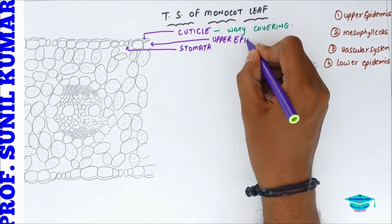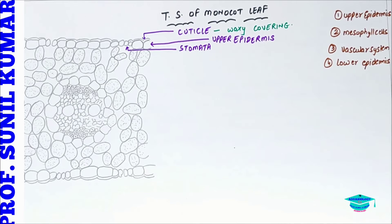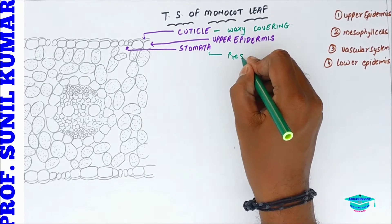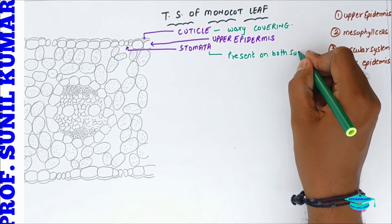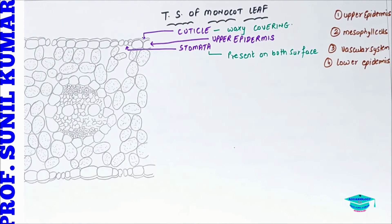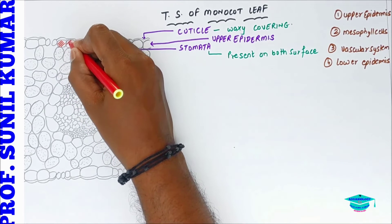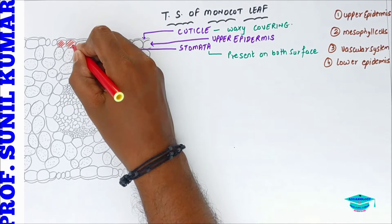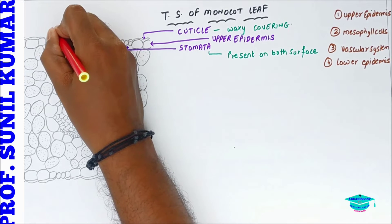The upper epidermis has stomata present, and in Monocot we need to understand it is present on both surfaces of the epidermis. On the epidermis, we have specialized cells called buliform cells. Buliform cells are basically large bubble-shaped epidermal cells.